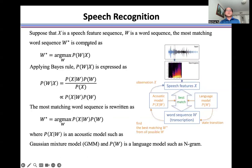Suppose that x is a speech feature sequence. W is a word sequence. The most matching word sequence, W*, is computed by taking argmax of probability of W given x.